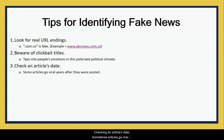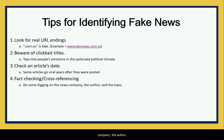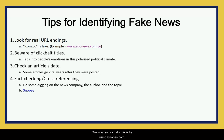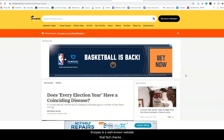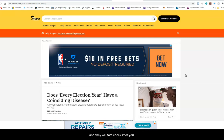Check an article's date — sometimes articles go viral many years after they were posted. Fact-check and cross-reference information that you read in news articles. Do some digging on the news company, the author, and the topic before you believe or share it. One way you can do this is by using snopes.com, a well-known website that fact-checks information online. Very often you will find a viral piece of information and they will fact-check it for you.